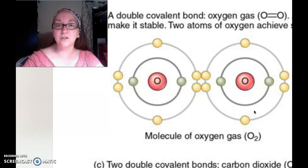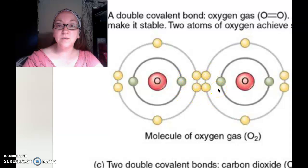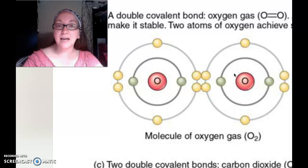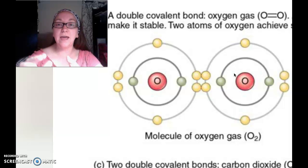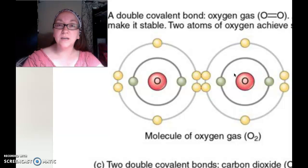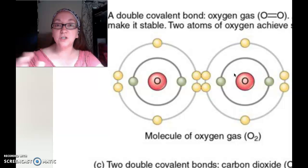That has to do with electronegativity. When two things share identically and equally, we say they are nonpolar. This would be a nonpolar covalent bond because oxygen and oxygen have the same electronegativity — the same charges exactly — so they share exactly the same. Nonpolar means there is no pole, no extra tug one way or the other, like a North-South pole with electromagnetic fields. There's no extra pull one way or the other if the two atoms are the same.